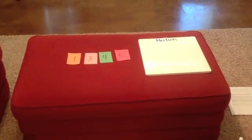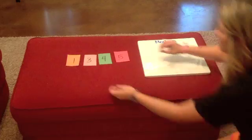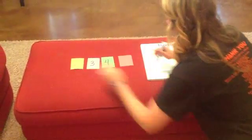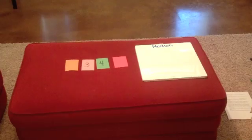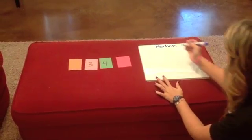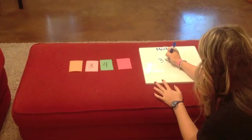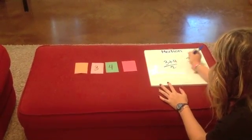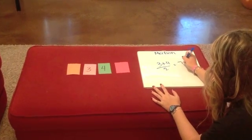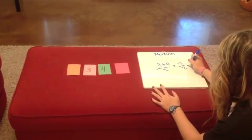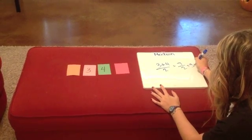Sometimes the numbers don't work out evenly when finding the median, like this one. We have two middle numbers. So we have to go about it by finding the average of these numbers. So we have to add 3 plus 4 and divide it by 2. So we have 7 divided by 2, which equals 3.5.